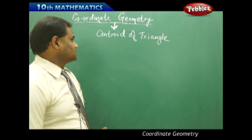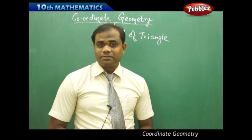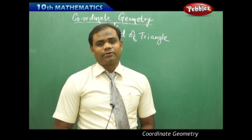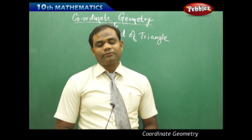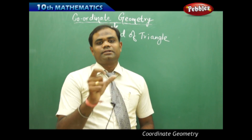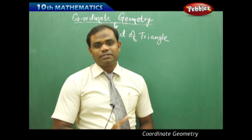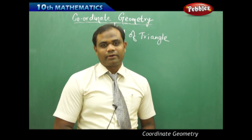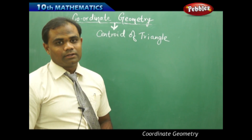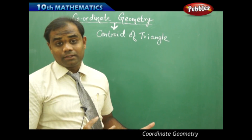Let's find the centroid of a triangle using coordinate geometry. We'll start with the definition of centroid and then find the coordinates of centroid for a given triangle A, B, C.